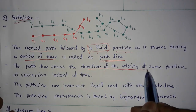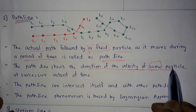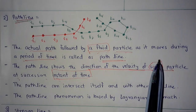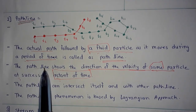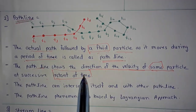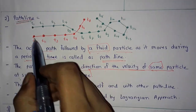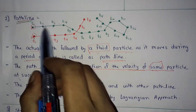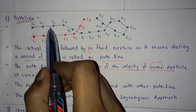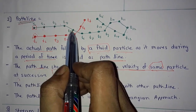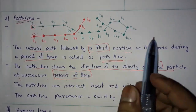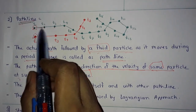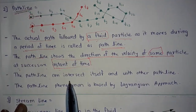Path line shows the direction of velocity of the same particle at successive instants of time — at this point, at this point, at this point — at every time interval it shows the direction of velocity for that same particle.